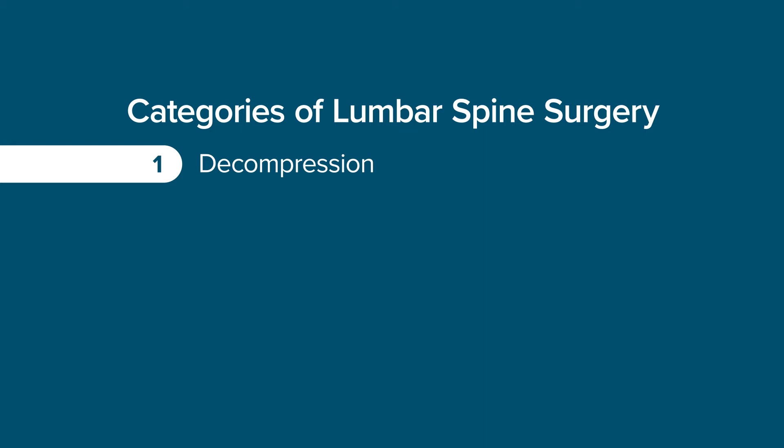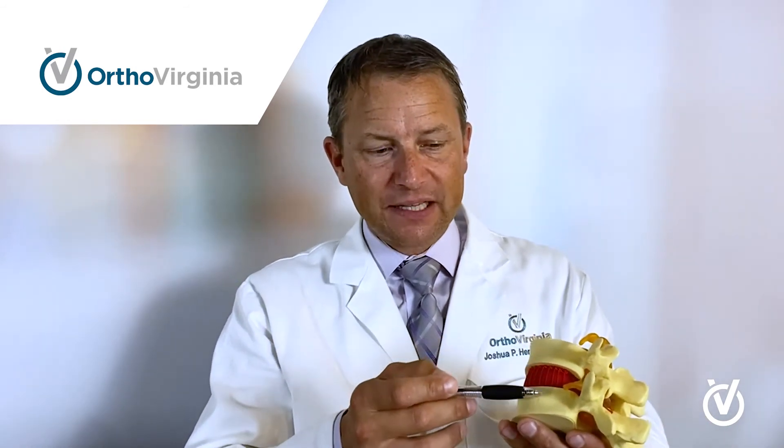The second broad category is called a fusion. In a fusion, we go in and put screws, cages, or blocks to help stabilize the spine, then fuse it with bone graft. In that procedure, we have the bone and disc, and we'll often take the whole disc out, open that collapsed space up, and put a spacer, block, or cage in there.